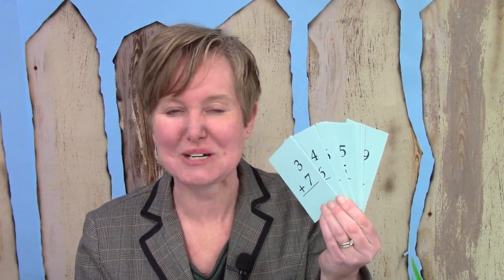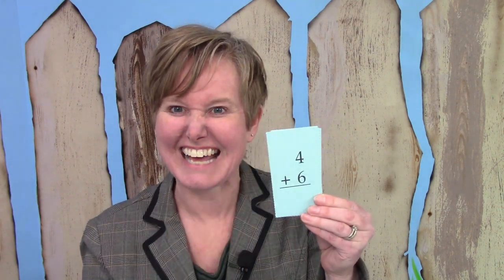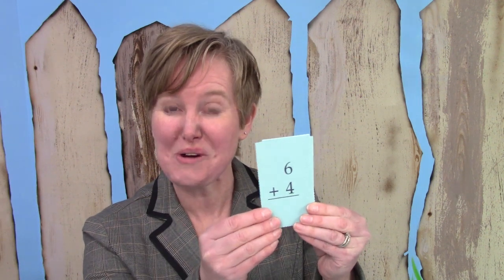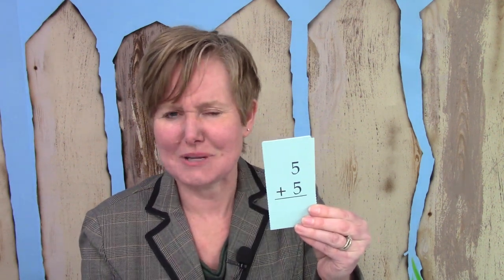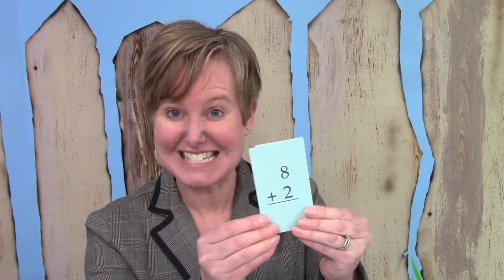Let's just read through our facts one more time and then we're going to say goodbye. Three plus seven is ten. Seven plus three is ten. Four plus six is ten. Six plus four is ten. Five plus five is ten. Two plus eight is ten. Eight plus two is ten. One plus nine is ten. And nine plus one is ten.